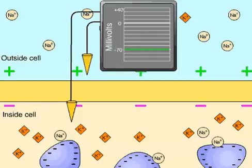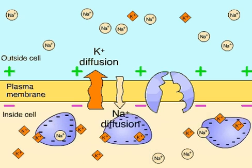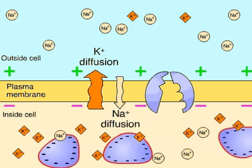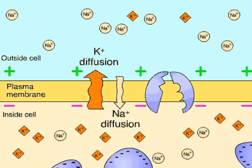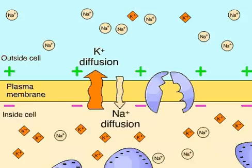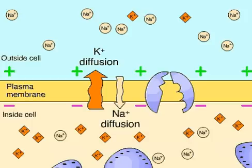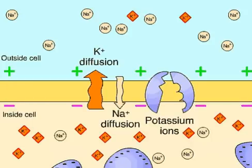What causes the resting potential? The plasma membrane of the neuron keeps large negatively charged molecules such as proteins inside the cell. Pumps and channels in the membrane regulate the flow of positively charged sodium and potassium ions. The cell maintains a higher concentration of sodium ions outside the neuron membrane than inside, and a higher concentration of potassium ions inside the cell than outside.